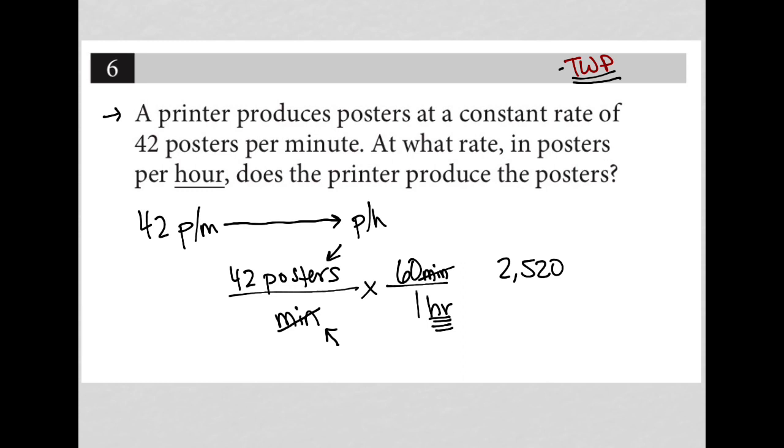Not that it matters for this question, but the units are exactly what we want, which is posters per hour. It does matter—I mean, it doesn't matter for what we need to tell the digital SAT. We're just telling them that our answer is 2,520. And there's our correct answer.